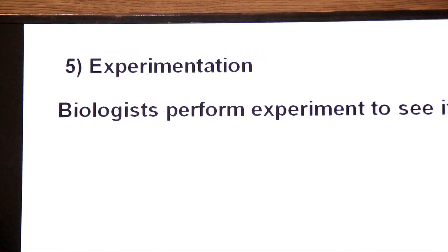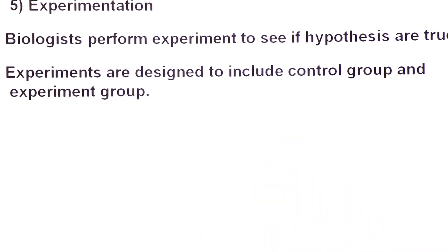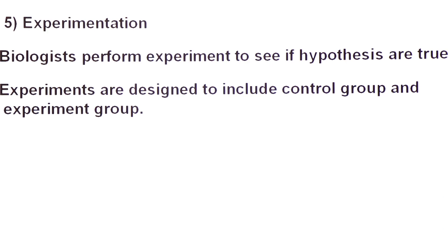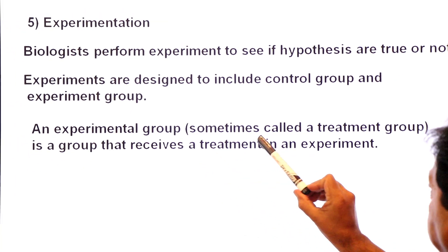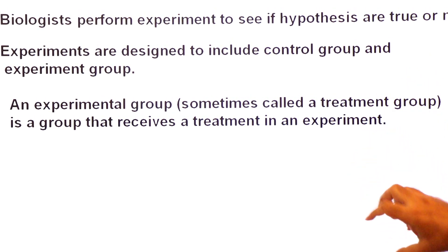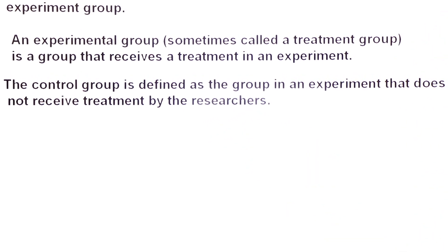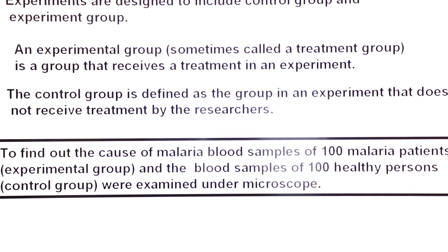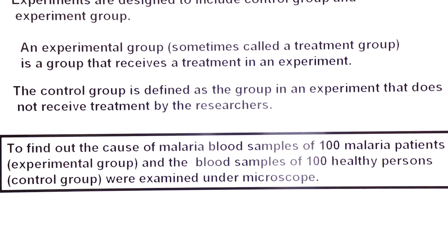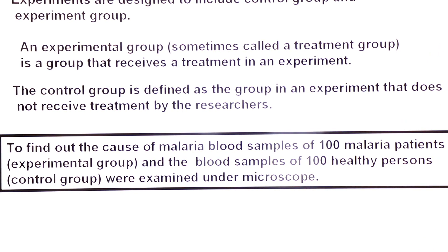Then we talk about experimentation. Biologists perform experiments to see if the hypotheses are true or not. Experiments are designed to include a control group and an experimental group. The experimental group — sometimes called the treatment group — is the group that receives treatment in an experiment. To find out the cause of malaria, blood samples of one hundred malarial patients formed the experimental group, and blood samples of one hundred healthy persons formed the control group, examined under microscope.